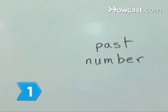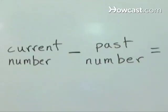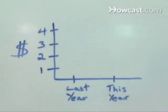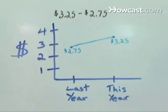Step 1. Subtract the past number from the current number. For example, if the price of gas this year was $3.25 a gallon and last year it was $2.75 a gallon, calculate $3.25 minus $2.75 to equal 50 cents.